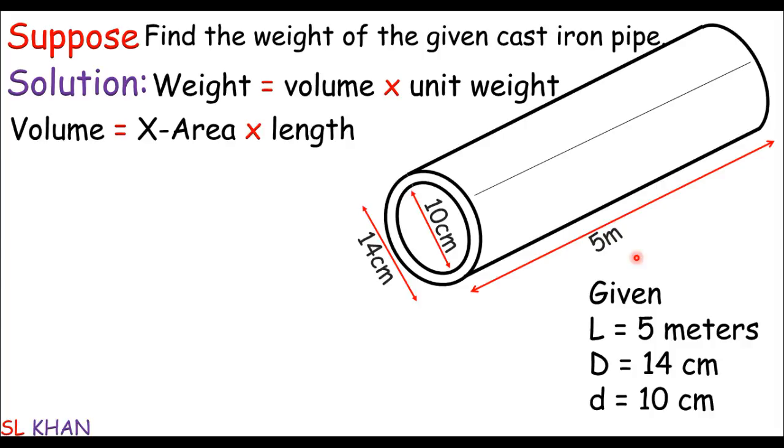Where the volume may be the cross-sectional area of the pipe times its length. Like you can say the pipe is just a hollow thing. So its cross-sectional area must be π times (D² - d²) divided by 4. So this is the cross-sectional area times the length.